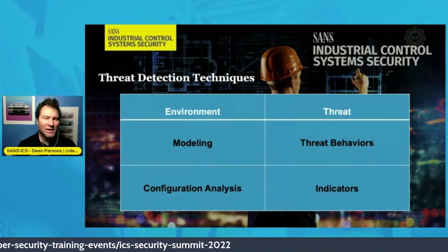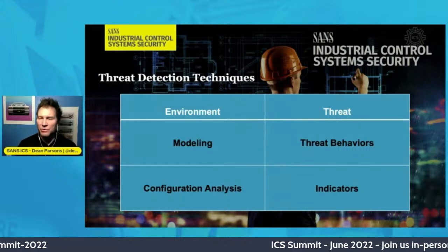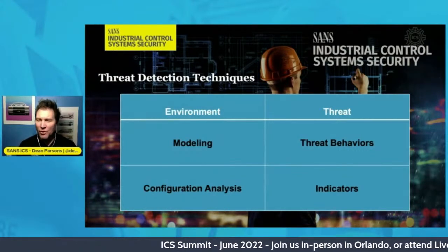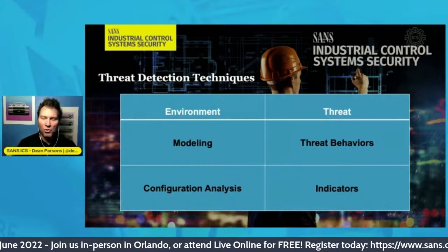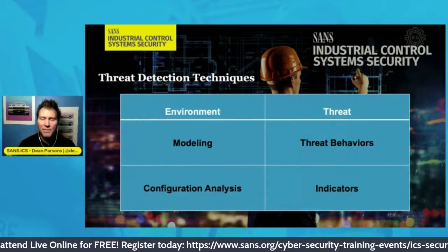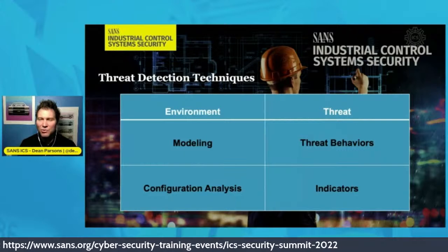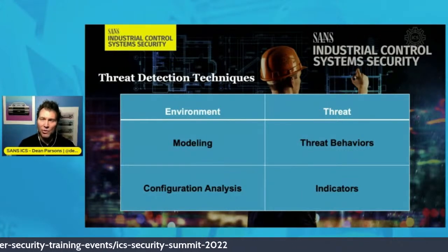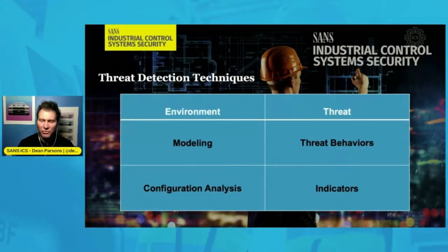Moving over to the threat categorization, we have threat behaviors — which are TTPs: tactics, techniques, and procedures — which give you a lot of return on investment operating under that kind of detection methodology versus indicators. Under indicators, we're only looking for indicators of compromise, which can be an IP address, a file name, a hash value, and so on. With indicators, it's more of a reactive security strategy because the adversary is already in the environment. So looking early on in an attack and the initial intrusion inside the ICS, maybe TTPs and threat behaviors could be more applicable to your organization.